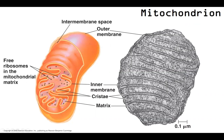These cristae are very real, and their function is to help us have more surface area — getting back to that structure-function concept. All of these inner membranes are completely embedded with components we're going to need for cellular respiration.